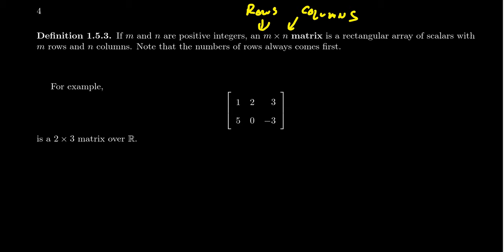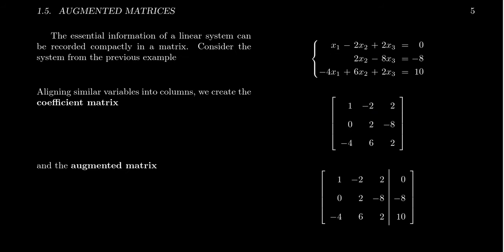Much like a vector is a linear array, a matrix can have multiple rows and multiple columns. In fact, every vector we've talked about is an example of a matrix. The vector [1, 2, 3] is just an example of a three by one matrix — the vectors we've introduced are really just one-column matrices.